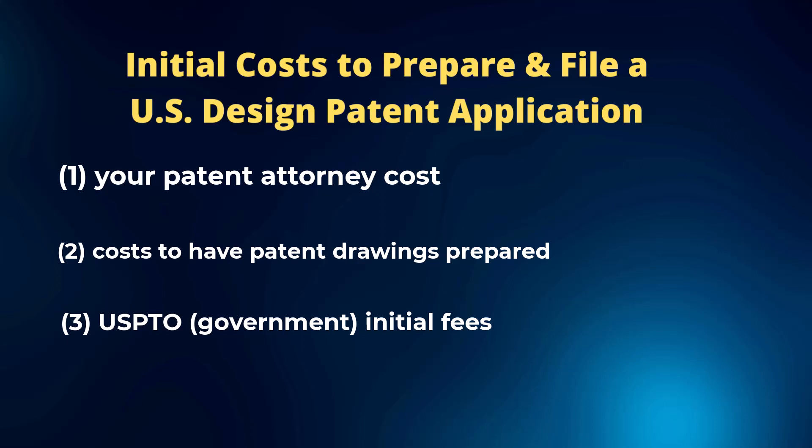Often with a U.S. design patent application, you're generally going to have seven different figures: one perspective or isometric view, and then the six standard orthogonal views — top, bottom, left, right, front, and back. That can vary too, depending upon if the design is only being shown from one view, or if there are symmetries where the left and right side look the same, in which case you can reduce the number of views.